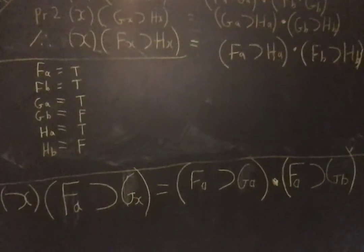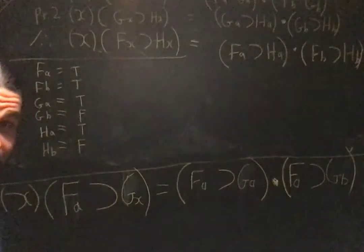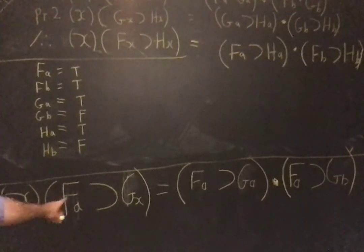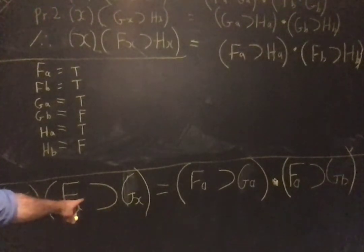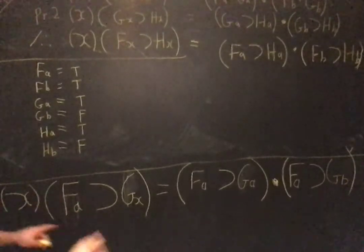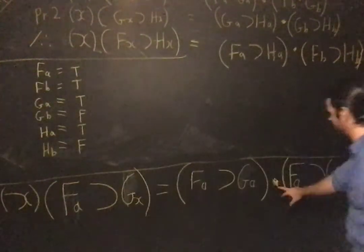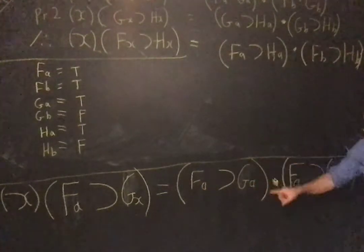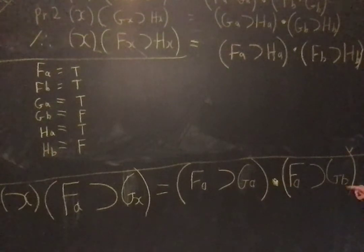Unit 16 part 7. So the computer froze up there, but this is what that last one came out to, right? So it's for all x, if a is f, then x is g, so it just turns into a conjunction. The a attached to the f remains the same, but the x gets replaced by a here and b here.